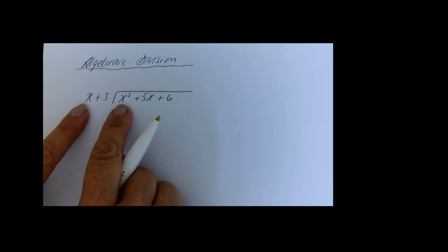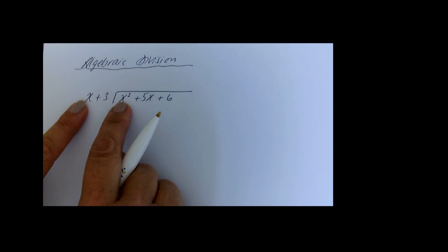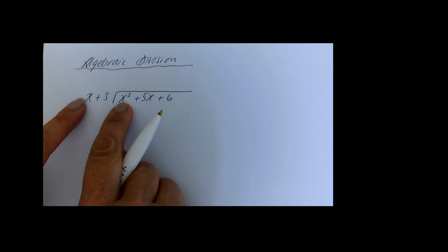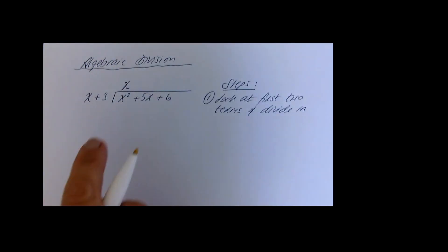There are a couple of steps to this. Your first step is to look at just the first term of the divisor and the first term of what you're dividing into. Divide x into x squared — or ask yourself: what needs to be multiplied by x to get x squared? The answer is x, so we put x on top.